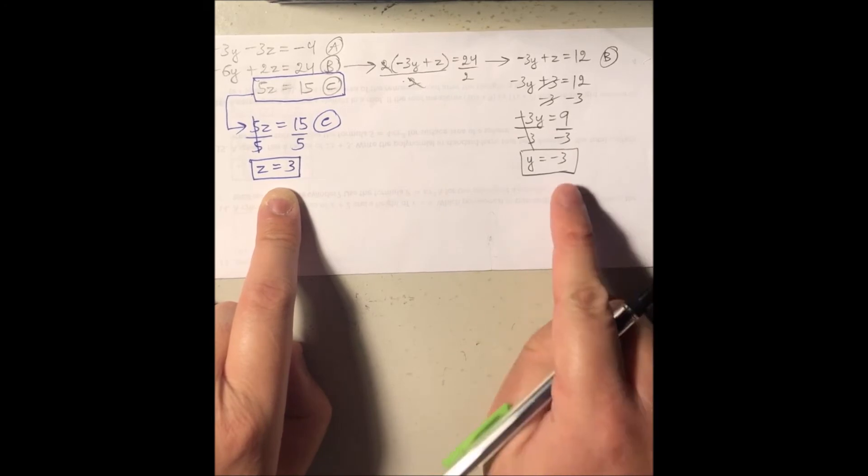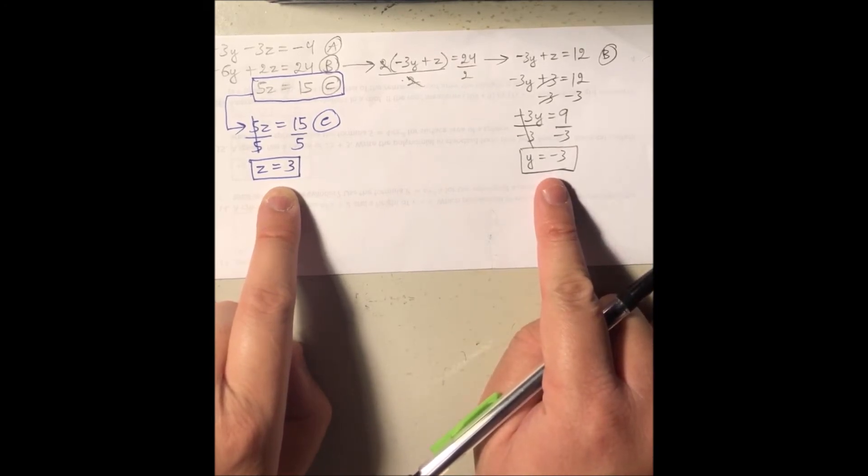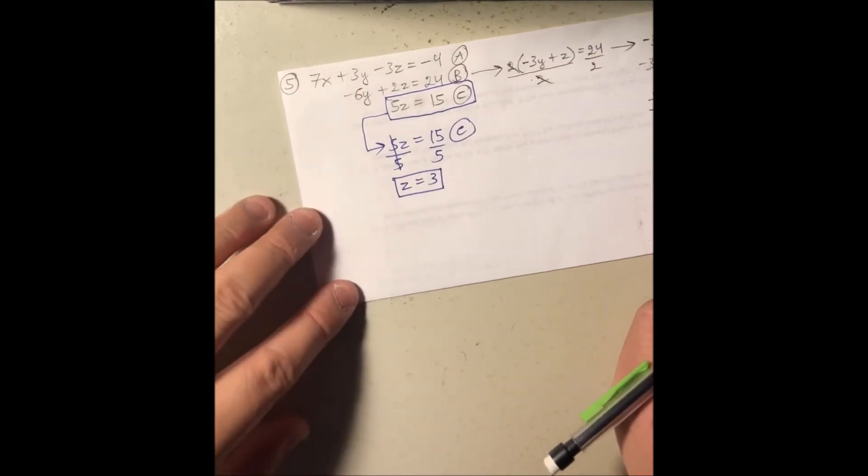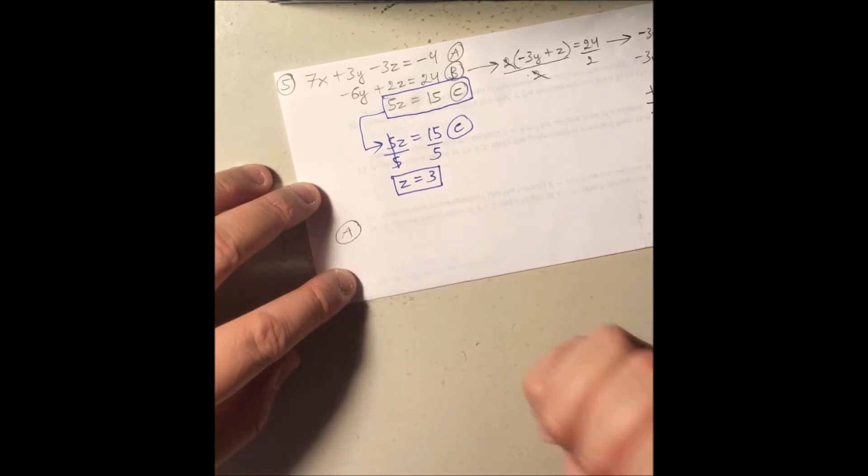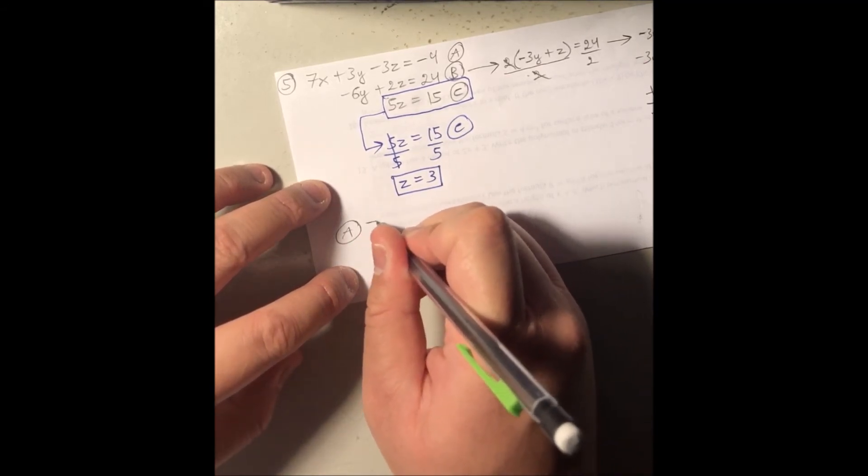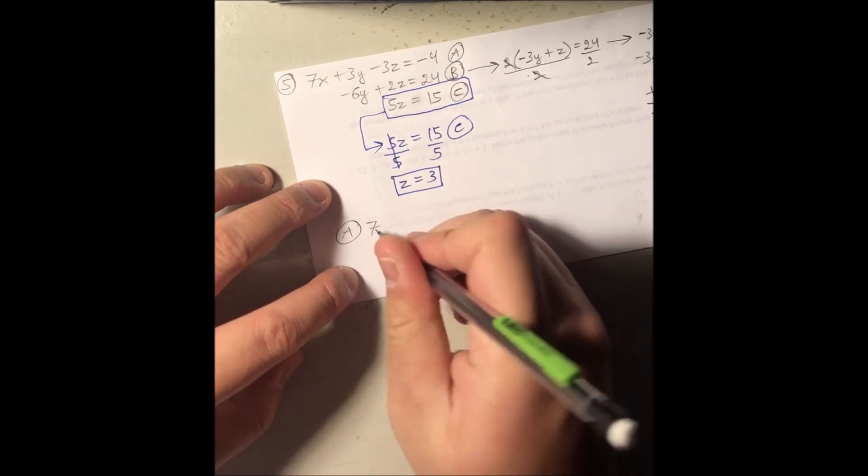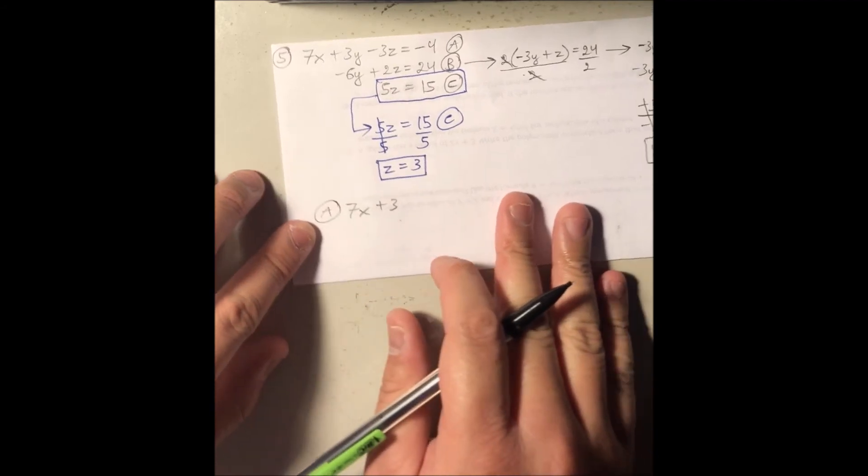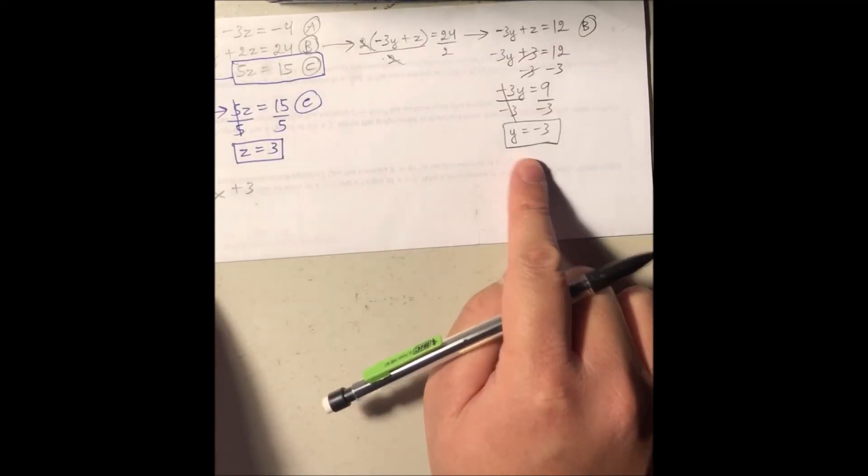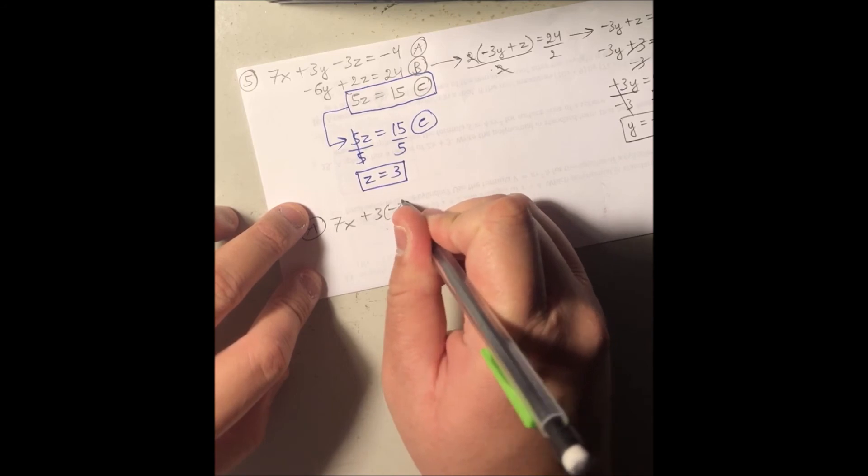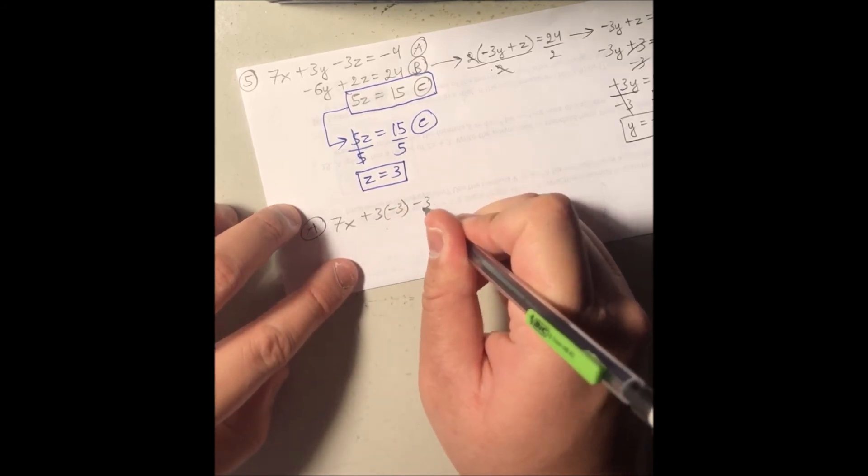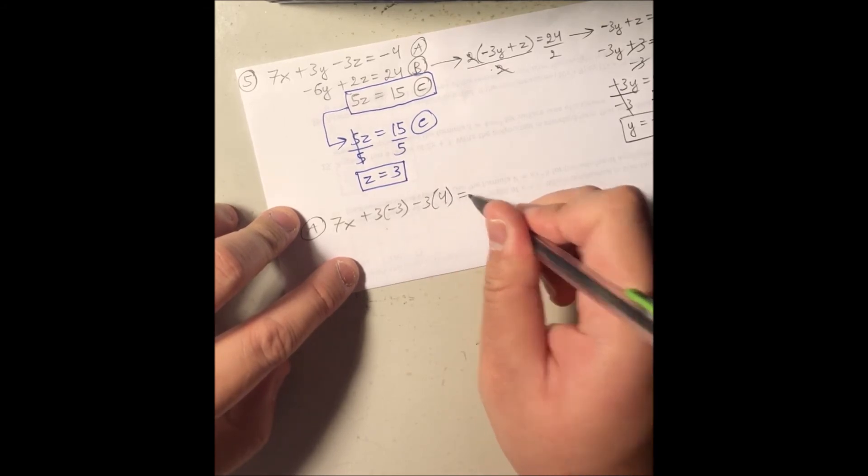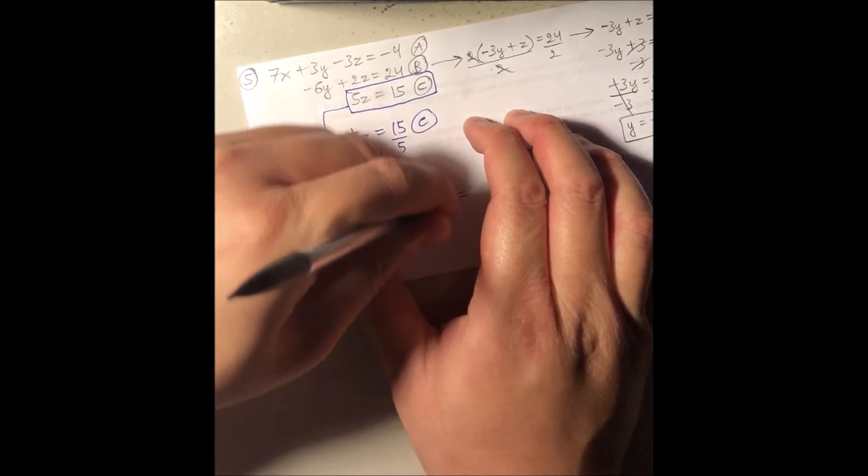With z being 3 and y being negative 3, take these two values and plug it back into the A equation to solve for the leftover x. So for my A equation, I'm gonna have 7 times x plus 3 times y. But y is negative 3, so I have 3 times negative 3. And then minus 3 times z, but z is positive 3, so I got 3 times—I mean minus 3 times 4. No, I mean minus 3 times 3.